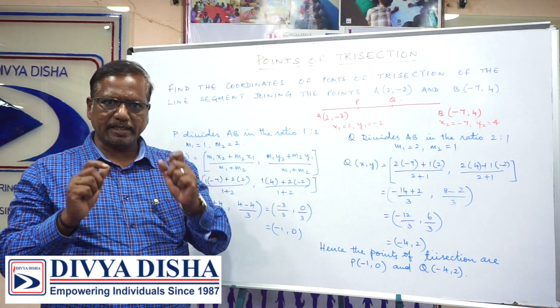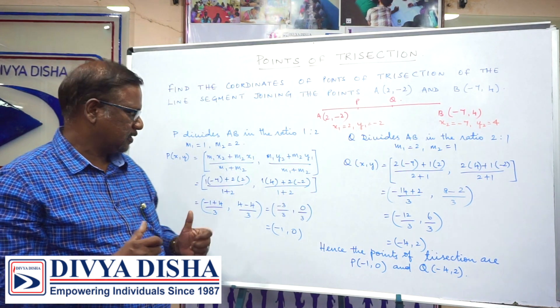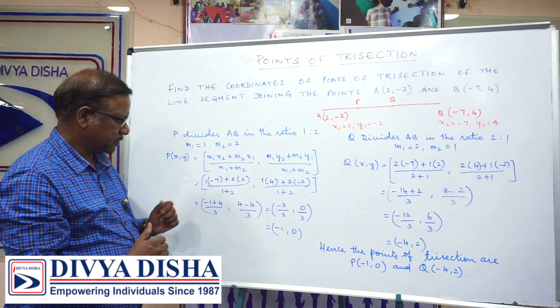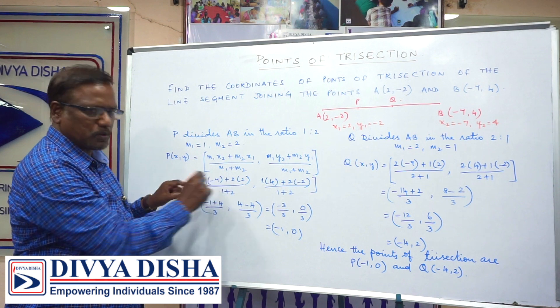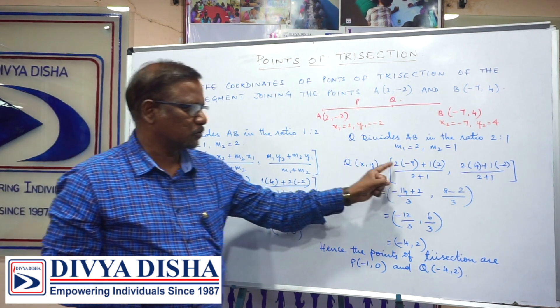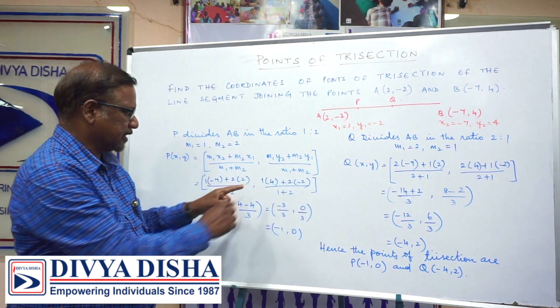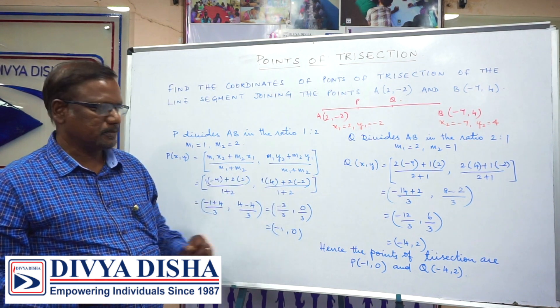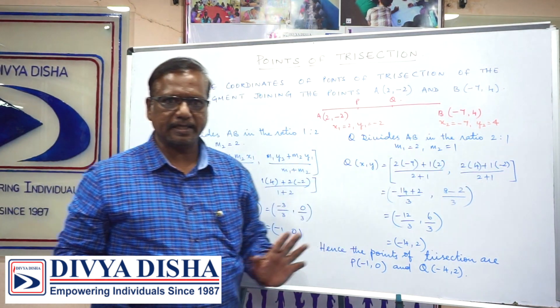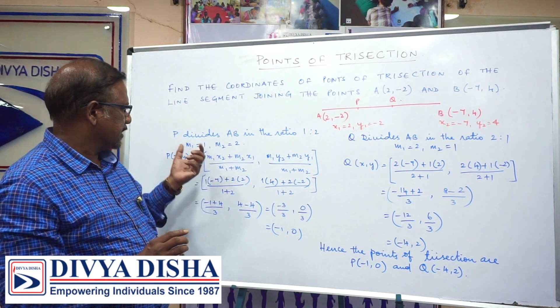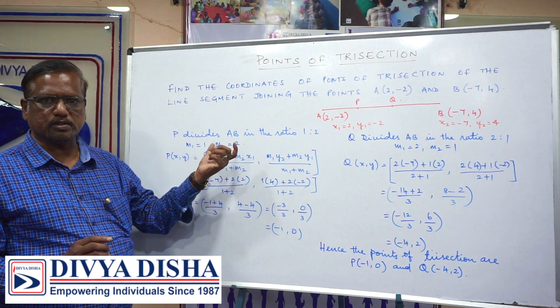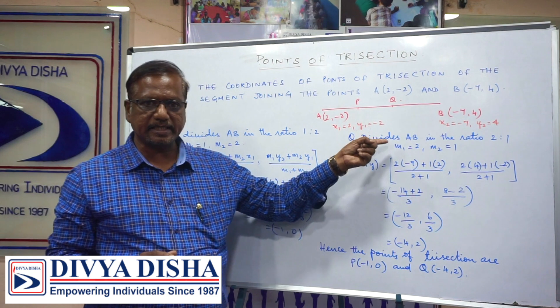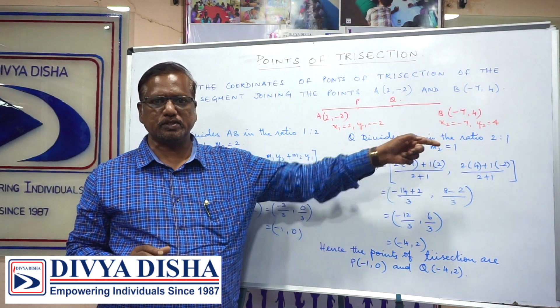If I explain it more simply, these values should be taken as is. Here where we wrote 1, 2, now we write 2, 1. Because here m1 is 1 and m2 is 2, but there m1 is 2 and m2 is 1.